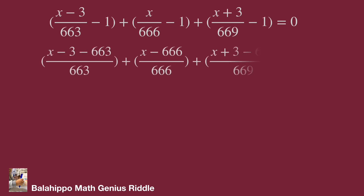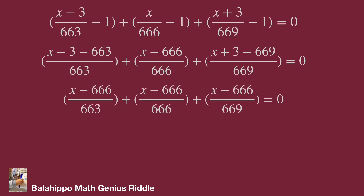Reduction to common denominators, then simplify it. We get x minus 666 over 663, plus x minus 666 over 666, plus x minus 666 over 669, equal to 0.